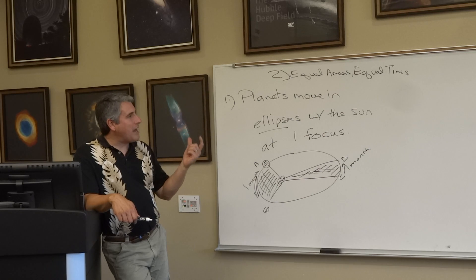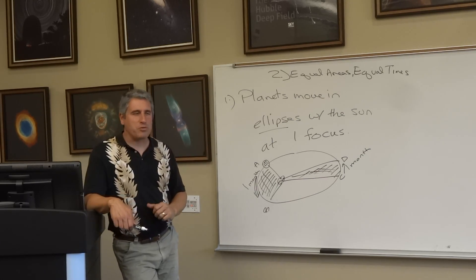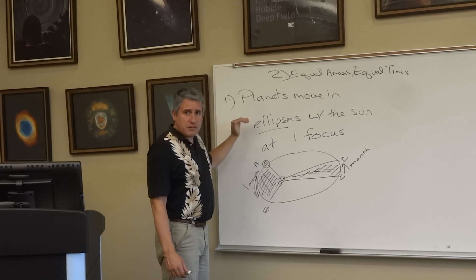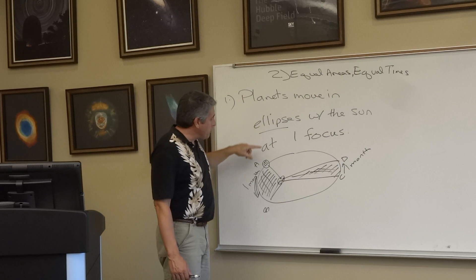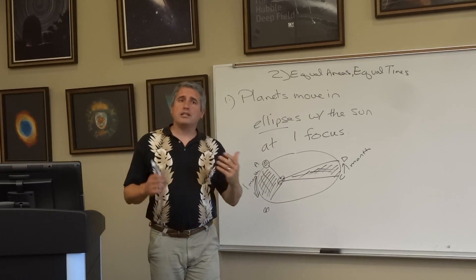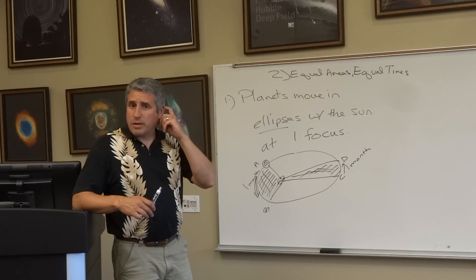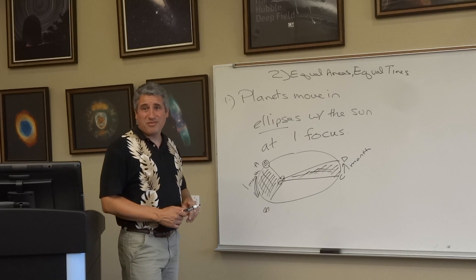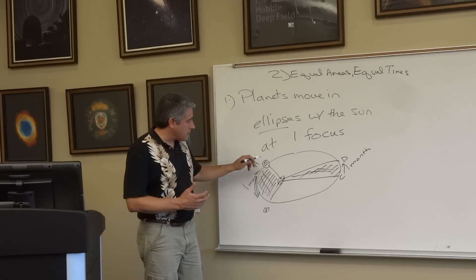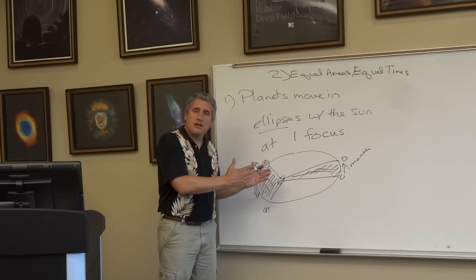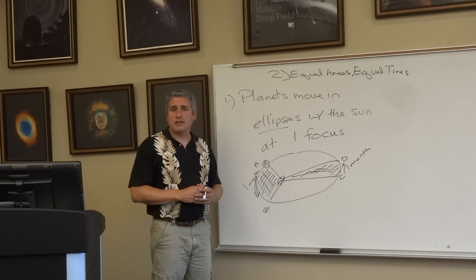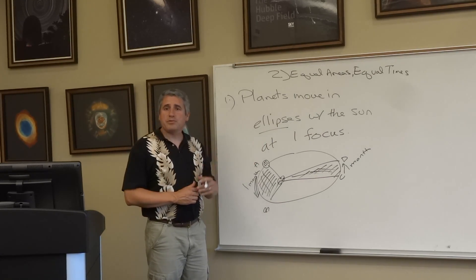So in Kepler we have a clarification and enhancement of the heliocentric model — a recognition that planets don't move in circles, they move in ellipses, and that they move faster when closer and slower when further away. He then went on to make a relationship between the period of a planet's orbit and its average distance. The closer a planet is to the sun in average distance, the faster it goes around, and the longer the time it takes to orbit, the further out it is. That's Kepler's contribution.